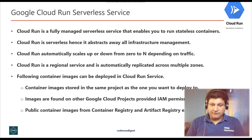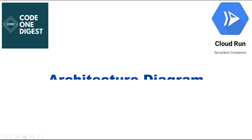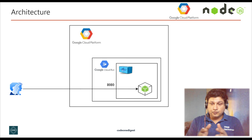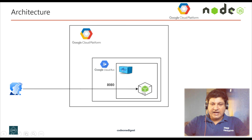Let me take you to the Google Cloud Platform login and explain step by step how to set up and run our containerized application in Cloud Run. But before that, let's look at the architecture diagram. In Google Cloud Platform, I'll be running Google Cloud Run service, and in that we'll be deploying a containerized Node.js application. This container image will be deployed into Google Cloud Run service, running on port 8080.